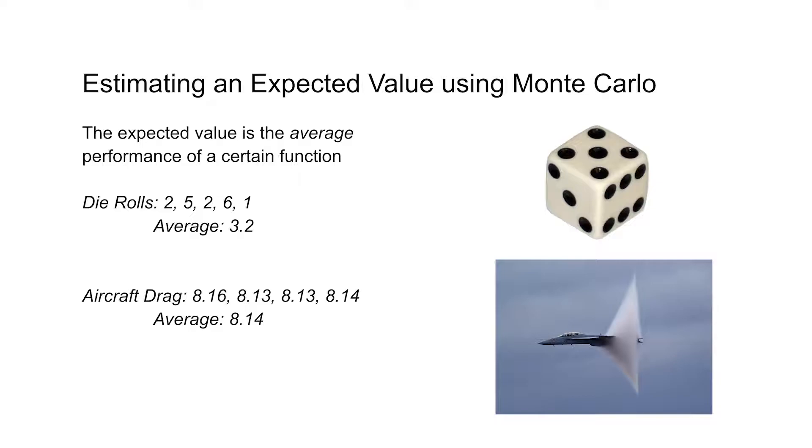The other really key idea here to note is that with that die example, we found that with a couple of rolls, we had a pretty large error. While on the airplane example, after a couple of flights, our error was only really small.